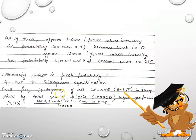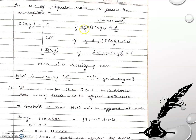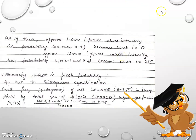Which pixels become black and which become white is determined by d. Pixels whose intensity probability falls from 0 to d/2 — that is, 0 to 0.1 when d=0.2 — are assigned 0, and those with probability from 0.1 to 0.2 are assigned 255. The rest remain unchanged. The 'probability' here comes from the histogram: it's the frequency of a particular intensity value divided by the total number of pixels.